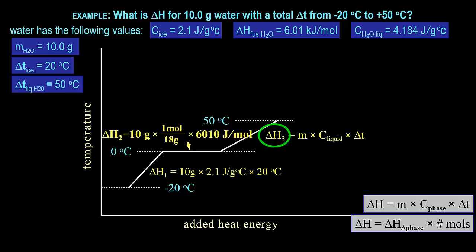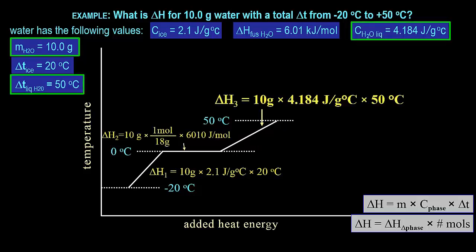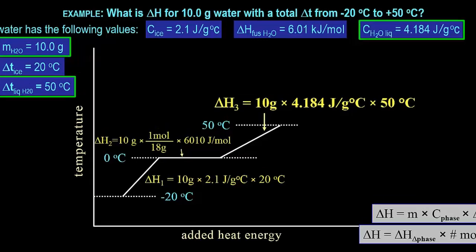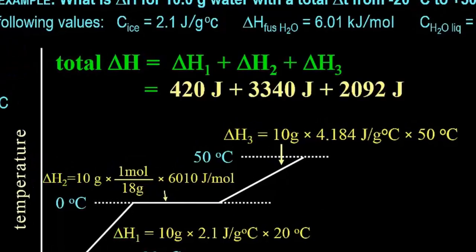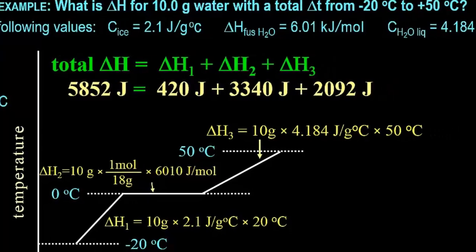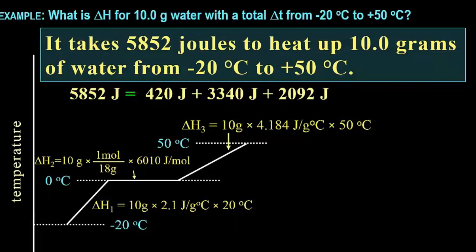Finally, the enthalpy change of heating the liquid water — delta H3. We plug in the correct values. Water boils at 100 degrees Celsius, but we are only going to 50, so that is the last calculation. The total delta H is the three heat changes added together, which gives 5,852 joules of energy. In other words, 5,852 joules of heat energy is required to change the temperature of 10 grams of water from negative 20 to positive 50°C.